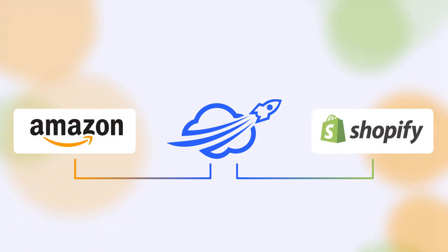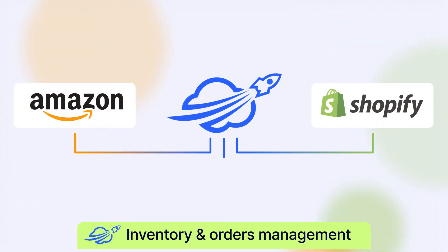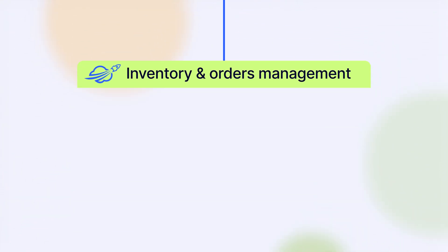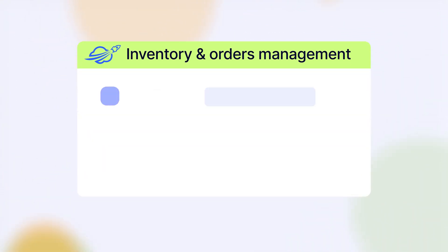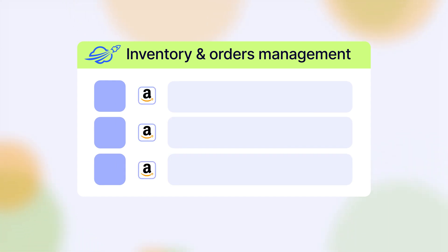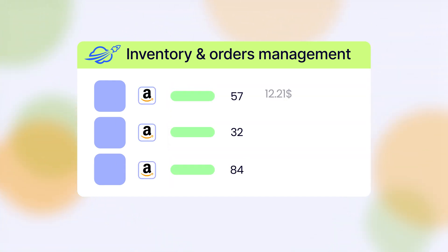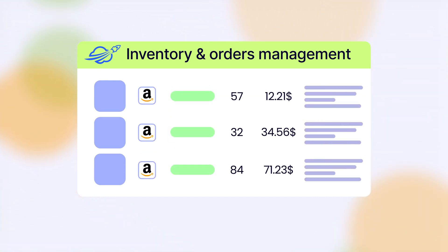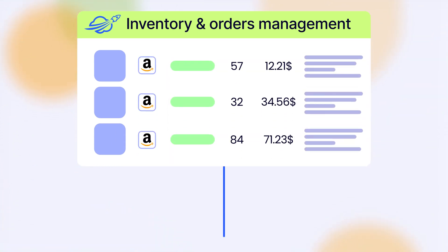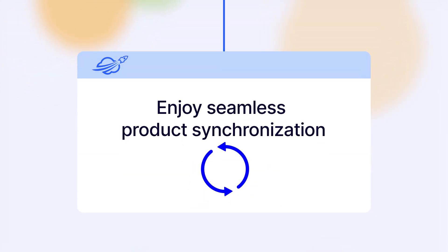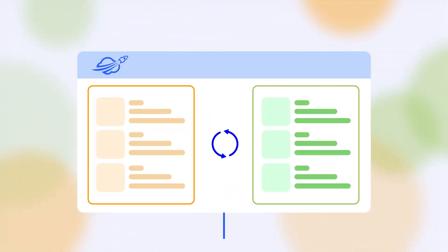Integrate your Amazon and Shopify operations with M2E Multi-Channel Connect. The app is embedded into your Shopify admin, so you can manage inventory and orders from a single place. Enjoy seamless product synchronization and get consistent product listings across both platforms.